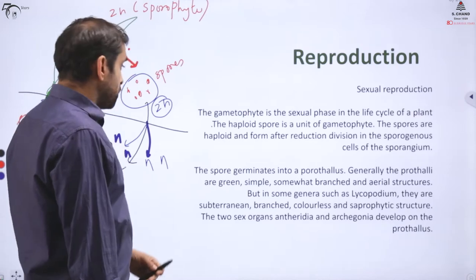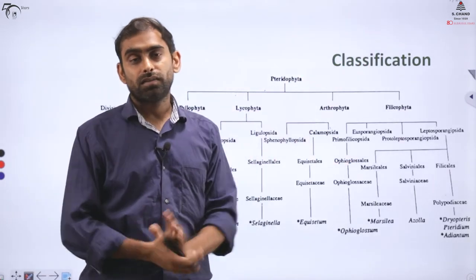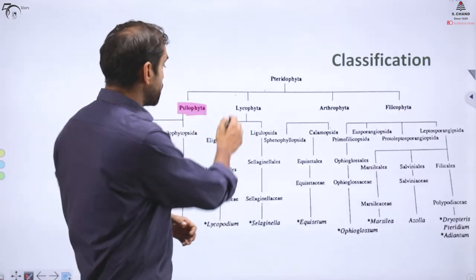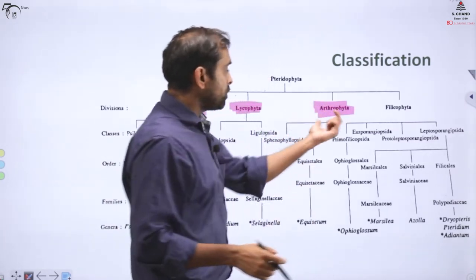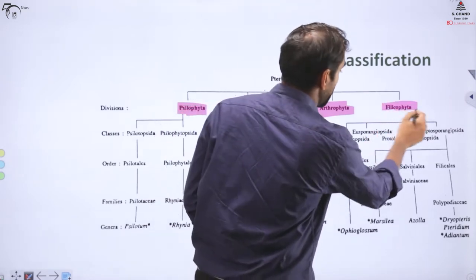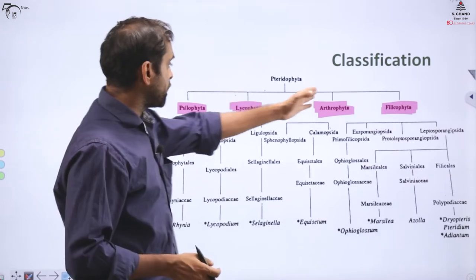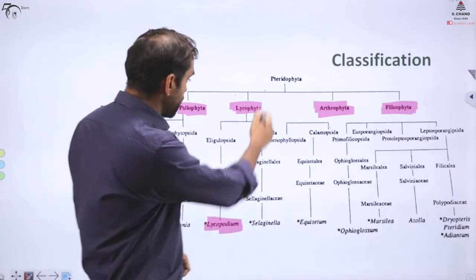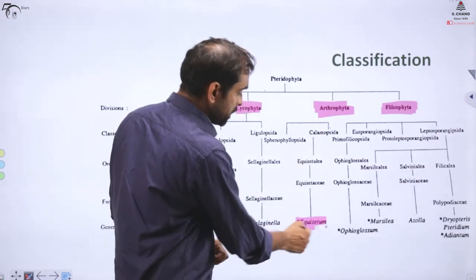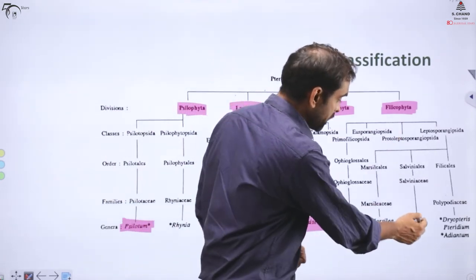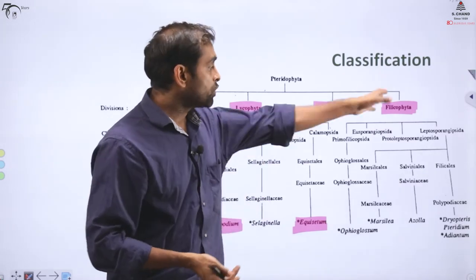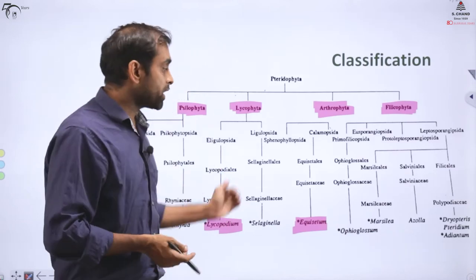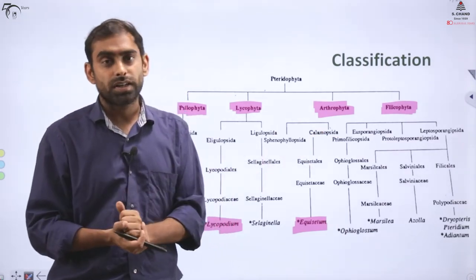If we look at the classification of pteridophytes, there are basically 4 groups based on morphology and functions: Psilophyta, Lycophyta, Arthrophyta (similar to arthropods in animals), and Filicophyta. Representative organisms are: Psilotum for Psilophyta, Lycopodium for Lycophyta, Equisetum for Arthrophyta, and Dryopteris and Pteris for Filicophyta. We will take a quick break and then come back to discuss representative examples of each category.